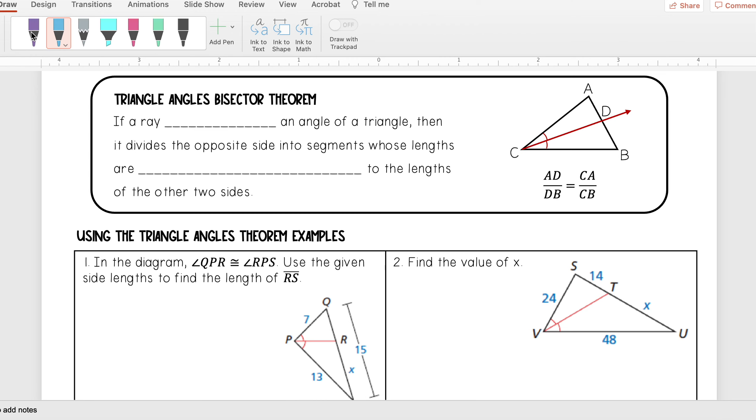In this video we're going to be talking about the triangle angle bisector theorem. This theorem tells us that if a ray bisects an angle of a triangle, then it divides the opposite side into segments whose lengths are proportional to the lengths of the other two sides.